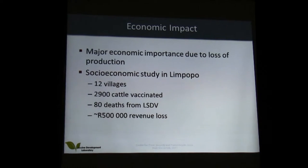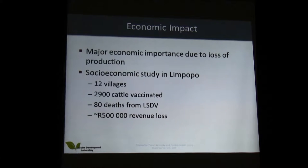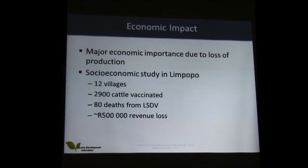A socioeconomic study was done in Poco a couple of years ago, where 12 villages were under study. There were 2,900 cattle that were vaccinated with the currently available vaccine, and of those, 80 died from lumpy skin disease, with an estimated loss of 500,000 rands in revenue. For a subsistence farmer who has only three cows, that is a huge loss if they depend mainly on their cattle for a living.